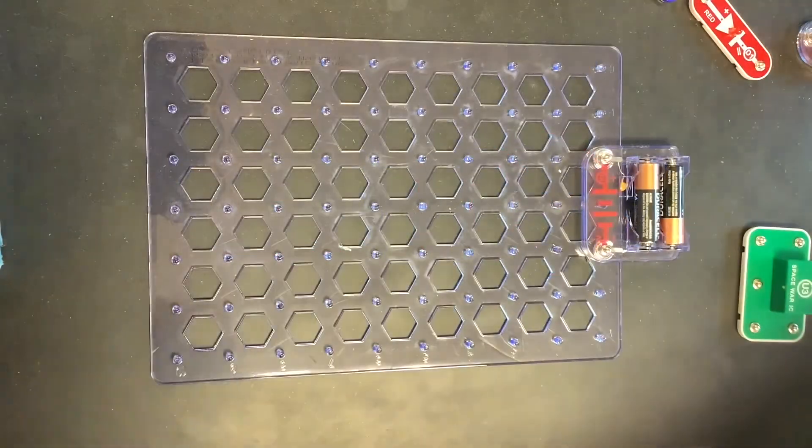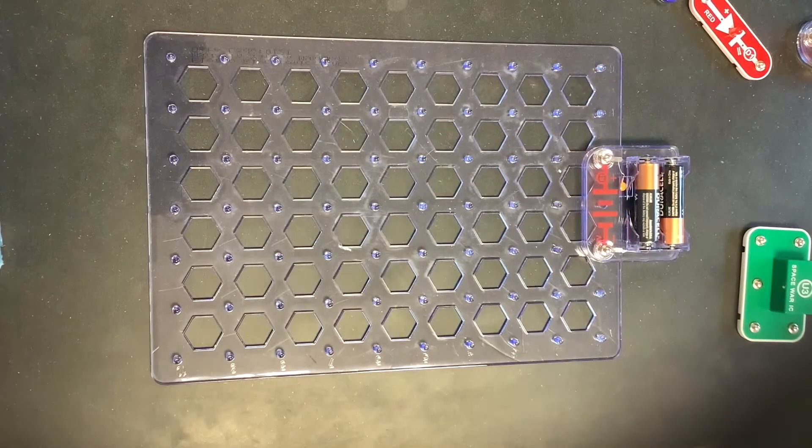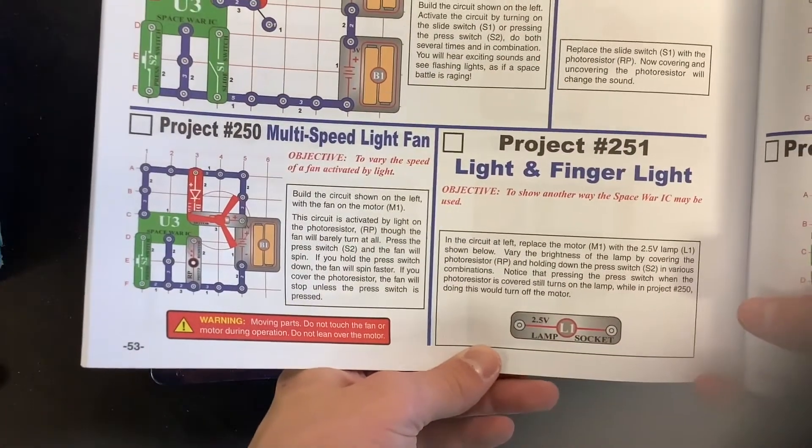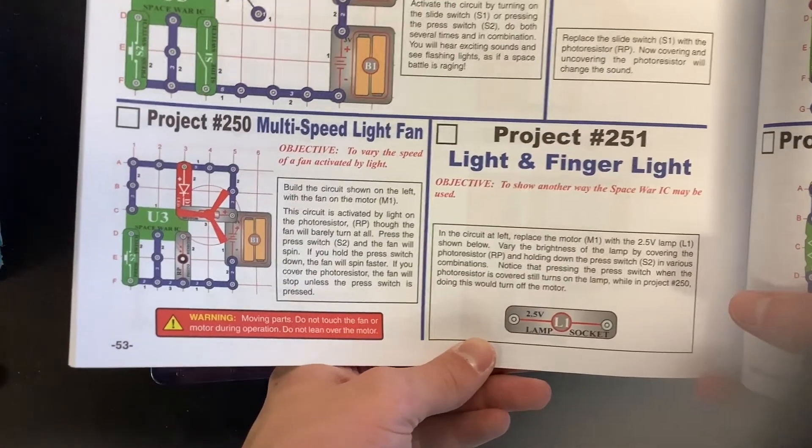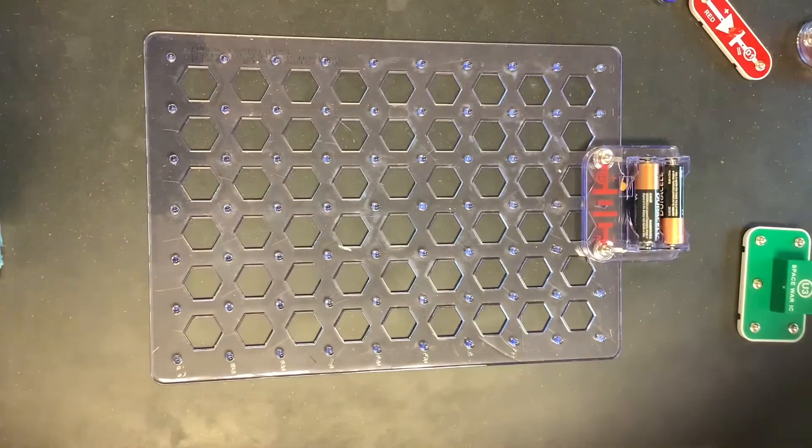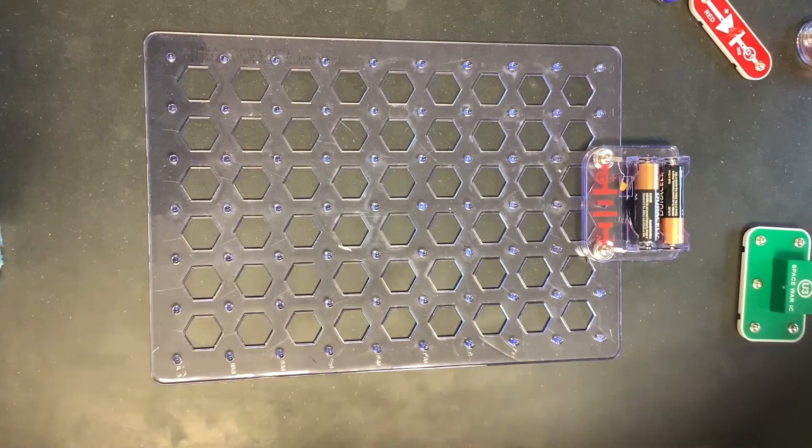Let's get forward here a little bit now. And we're going to go to project number 250 or 251, whichever you like, really. So I'm going to go ahead and build project number 250, which is the multi-speed light fan.